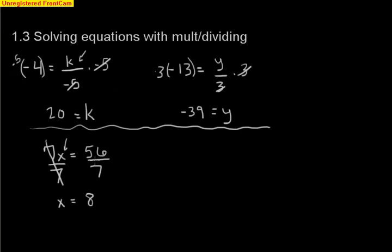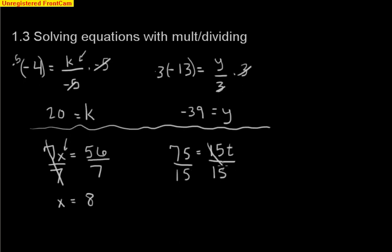Another example: 75 is equal to 15t. What's happening to t? t is getting multiplied by 15. So we divide by 15 — that's the inverse operation. 15 divided by 15 cancels out and we're left with t. Then 75 divided by 15 is 5. So there are two examples where we multiplied both sides and two where we divided both sides.